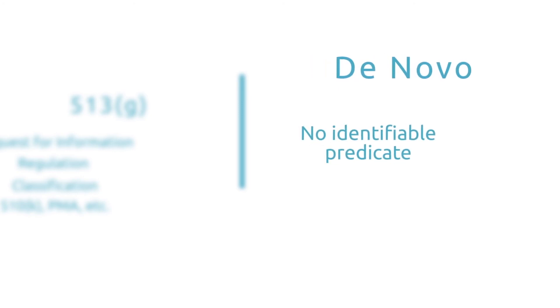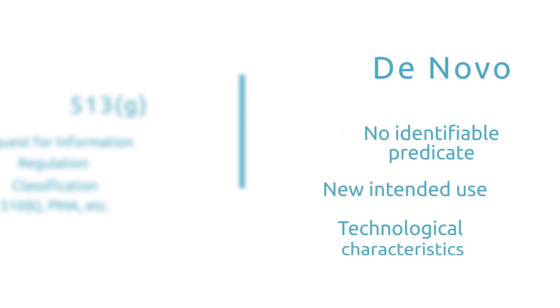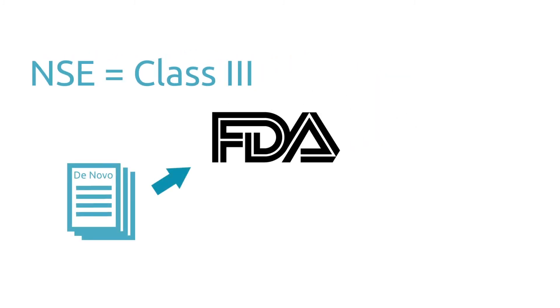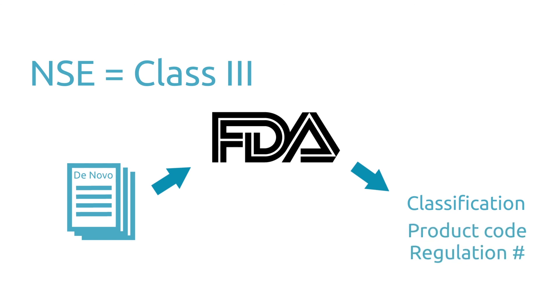De novo submissions, on the other hand, are used for truly innovative and new devices. Your device must have no identifiable predicate device with which to establish substantial equivalence, or have a new intended use, or technology that raises new questions of safety and efficacy. Devices considered not substantially equivalent, or NSE, are automatically designated Class III. If you believe your device belongs in a lower-risk class, you may submit a de novo with data to support your requested classification — Class I or Class II. The FDA will review your de novo submission and determine if your device is Class I or Class II. If rejected, your device will remain Class III, likely requiring a PMA. The FDA may issue an entirely new product code and regulation number.